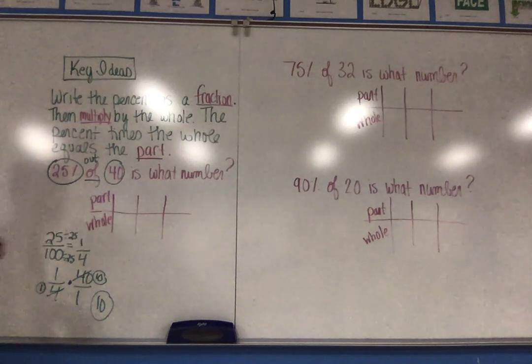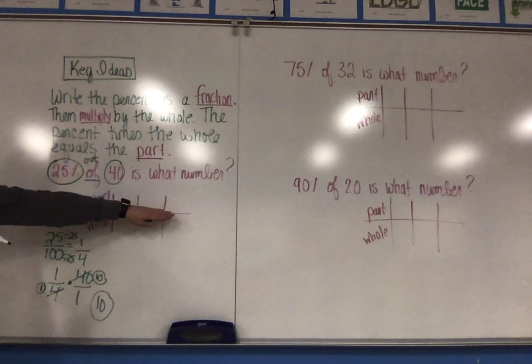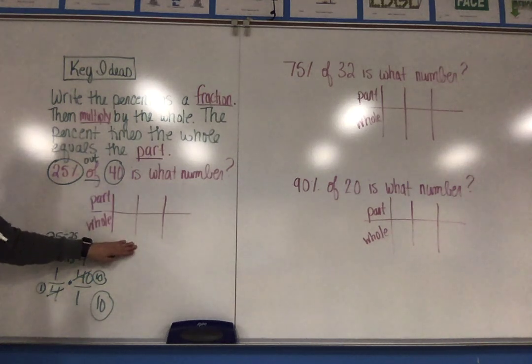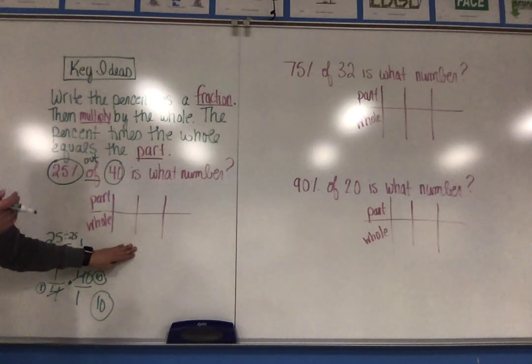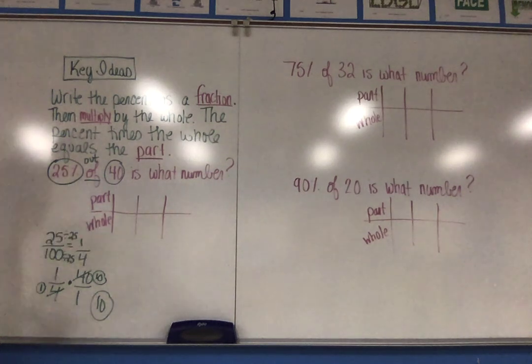The second method is using a table, and you can see in the table I put the part on the numerator and the whole on the denominator. This is always the case even if the part is greater than 100.